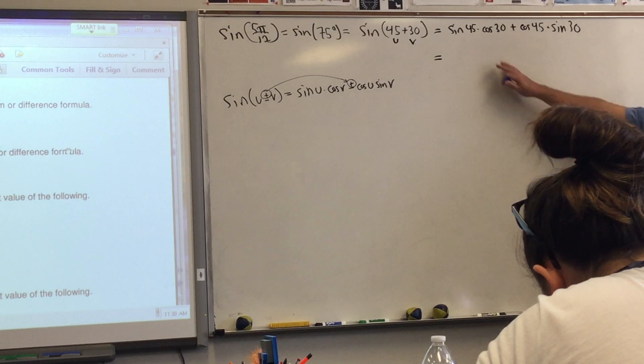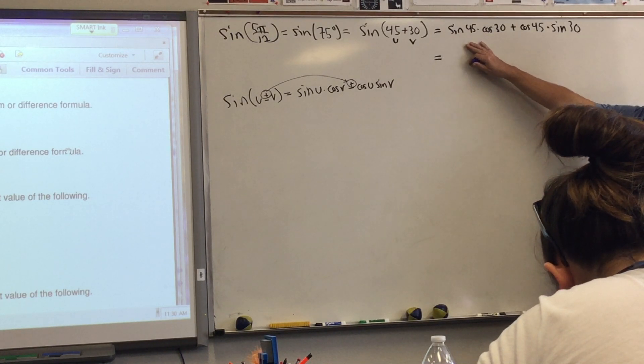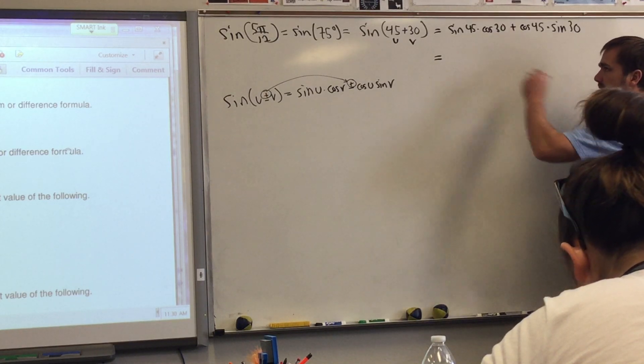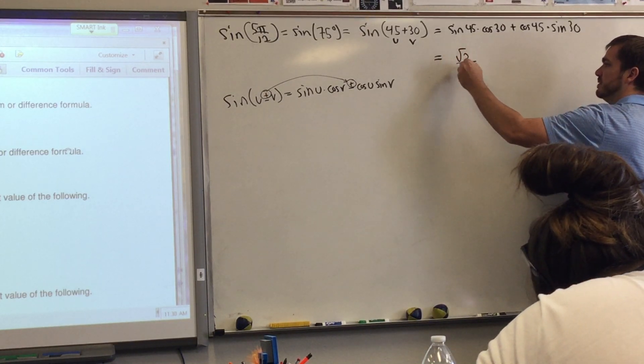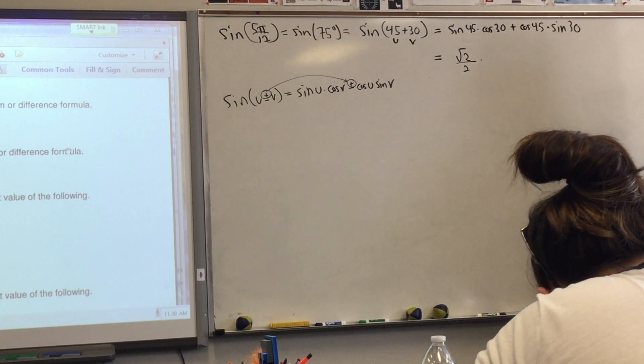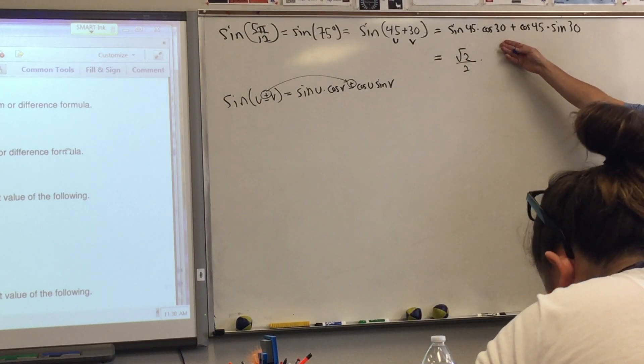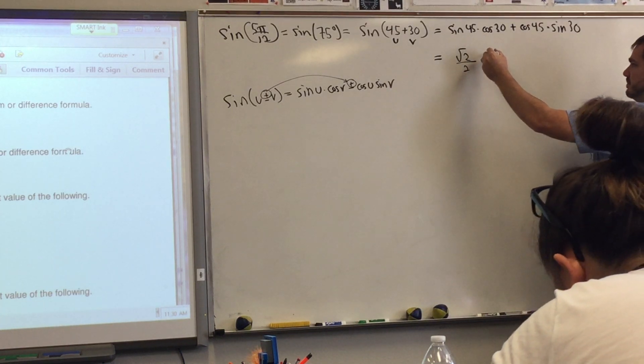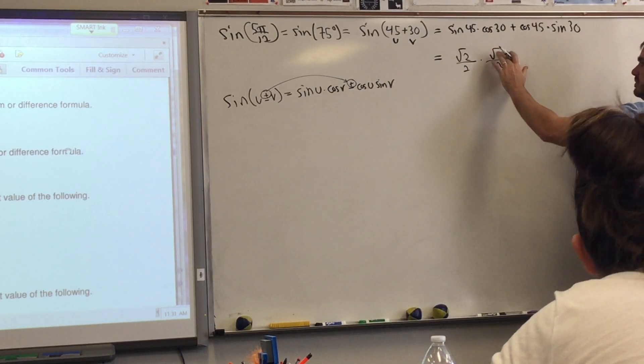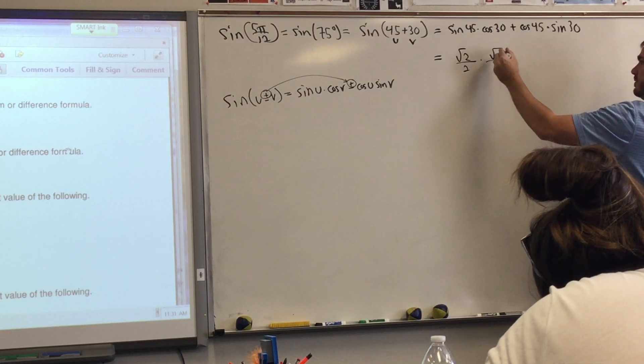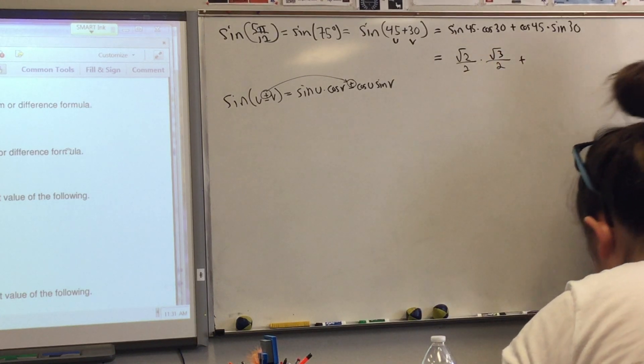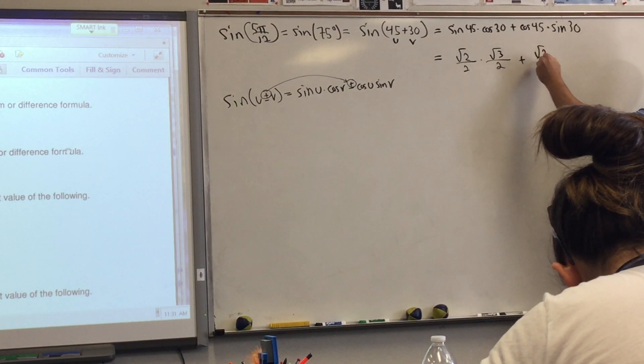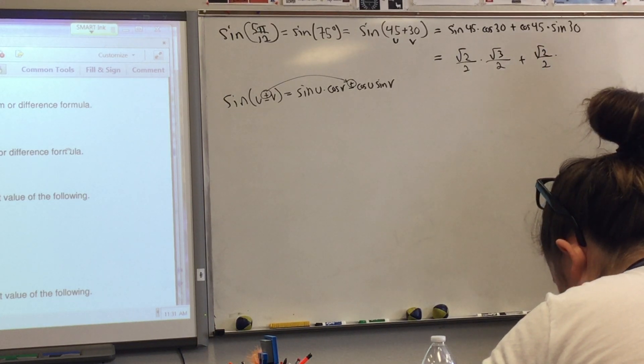Alright. We'll go ahead and look at the unit circle. Call it out to me, class. What's the sine of 45? Root 2 over 2. Remember, we want to say sine, we're looking for the y values. Cosine, we're looking for the x values. Cosine 30, call it out. Root 3 over 2. Root 3 over 2. Cosine 45. Root 2 over 2. And sine 30. One-half.